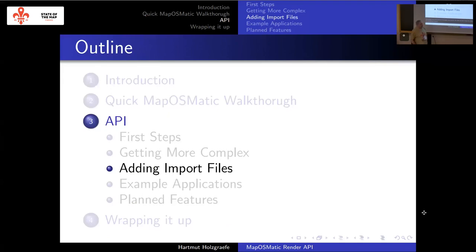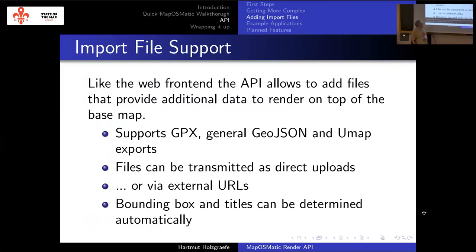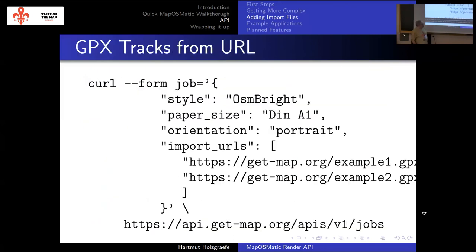It's also possible both in the web interface and in the API to add certain extra files, especially GPX tracks or the GeoJSON format exported by UMAP. These will be rendered as overlays too. In the web interface it's just a simple file upload. If you know HTTP, passing files as part of each HTTP request can be a bit tricky. In the simplest form, you can just add an array of import URLs giving URLs where your GPX or UMAP files can be fetched, and then the renderer will take care of downloading and processing these.